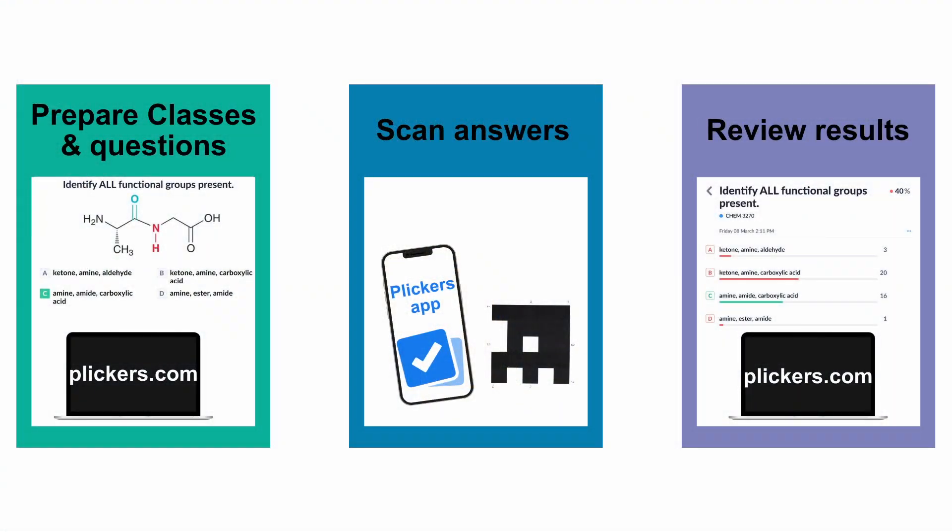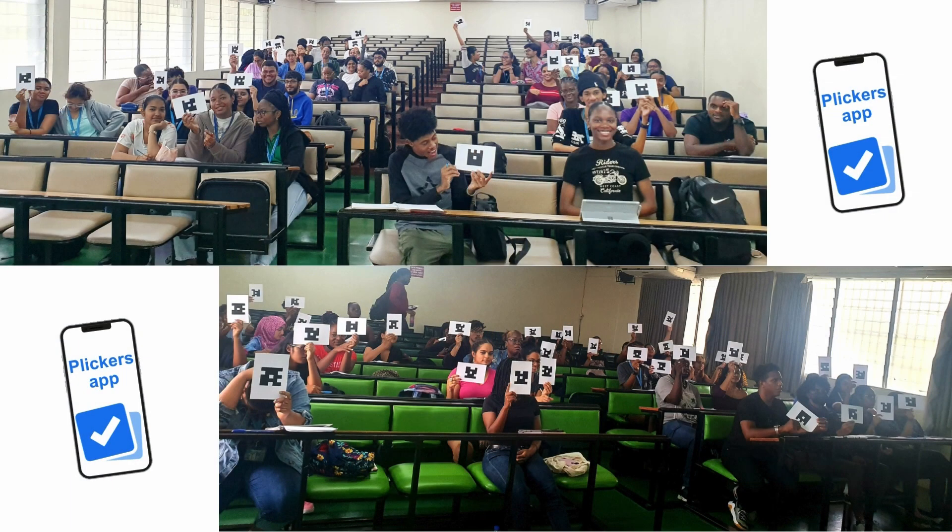I set up the questions in a queue before class, then I just project the questions on the Plickers website. I give them about a minute depending on the level of the question — and I tell them this is training for their exams, being able to think quickly. They put up their cards with the selected choice — A, B, C, or D — and then I scan the room.